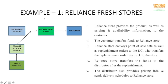Whenever a customer goes to a Reliance Fresh store to purchase something, the store provides the customer not just with the product but also with pricing and availability information. The Reliance store provides the product — this is the flow of product toward the customer. There are also banners showing pricing on each and every product and banners showing discounts and offers, which represent the flow of information, denoted by 'I'.